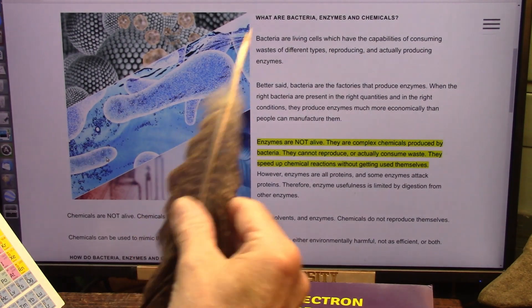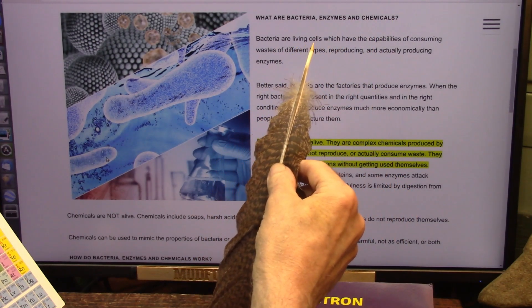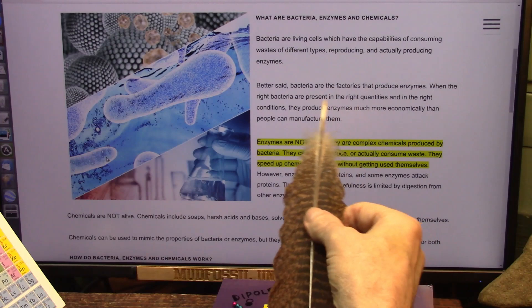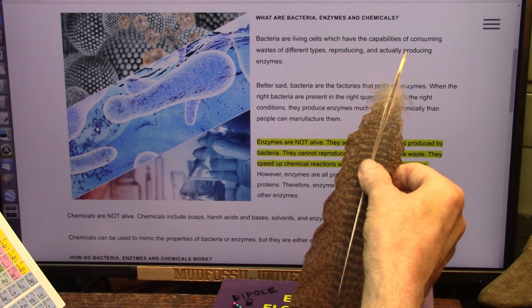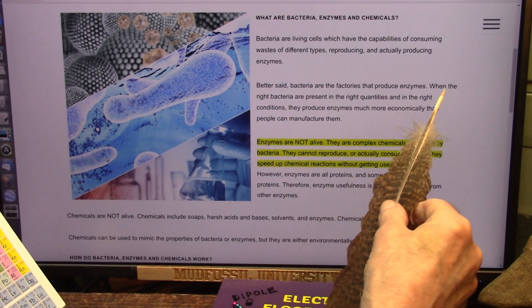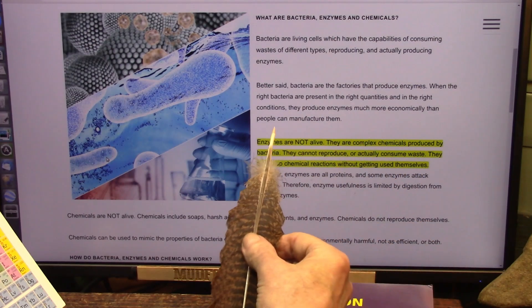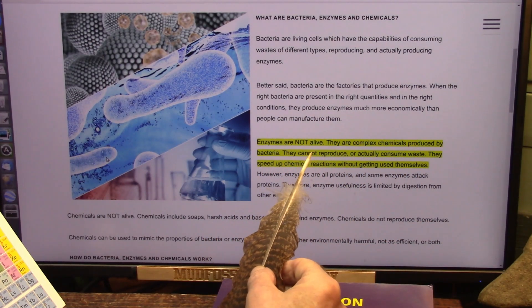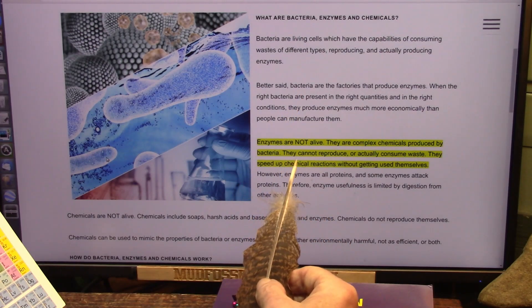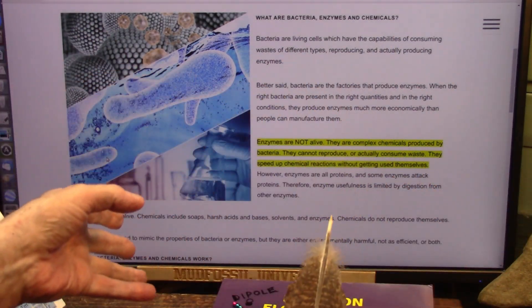Let me just show you something how it does happen. This is where chemistry and biology overlap very seriously. What are bacteria, enzymes, and chemicals? Bacteria are living cells, which I'll show you in a minute. They have the capabilities of consuming waste. They eat things. They can reproduce. So once they're established, they'll keep reproducing themselves. And they actually produce enzymes. Better said, bacteria are the factories that produce enzymes. When the right bacteria are present in the right quantities, in the right conditions, they produce perfectly good enzymes, much more economically than people can manufacture.